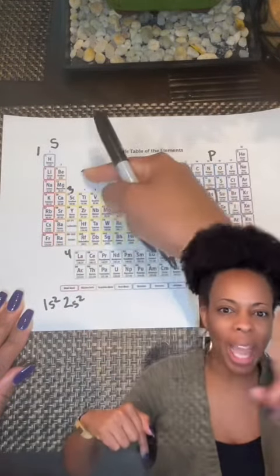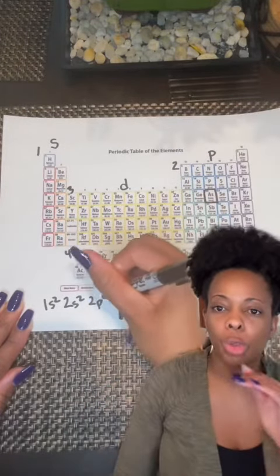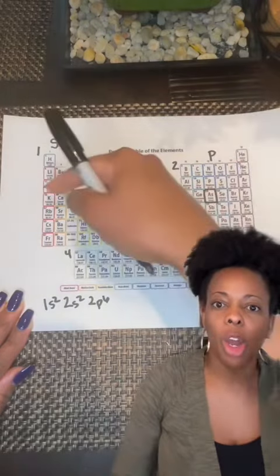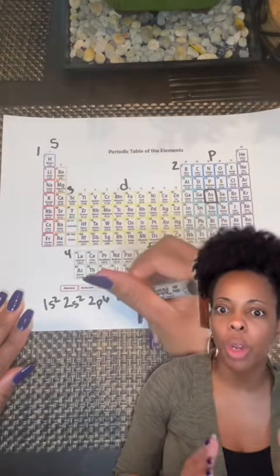Then we go down the row, act like a typewriter, and now we're going to say 2S2, because we've gone through that S sub level. We get over to the other side, and we go through our P subshell, which started at two, so we were at 2P6.